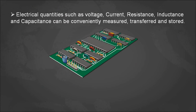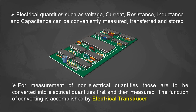Electrical quantities such as voltage, current, resistance, inductance, and capacitance can be conveniently measured, transferred easily, and stored easily. In modern times, a lot of equipment and closed loop systems use digital electronics, which can store and transfer electrical data over longer distances. Hence, for measurement of non-electrical quantities, those quantities must first be converted into electrical quantities and then measured.